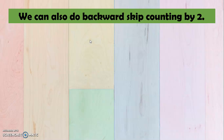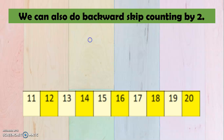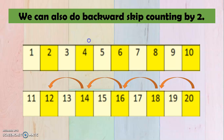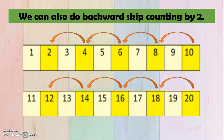Now we can also do backward skip counting by 2. So we will start from 20, then we go to 18, 16, 14, 12, 10, 8, 6, 4, and then 2.